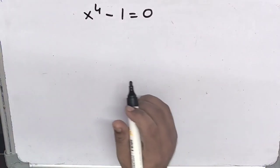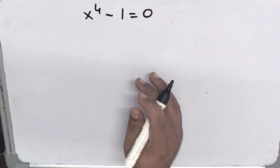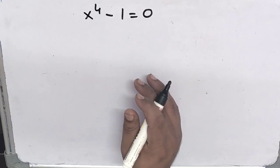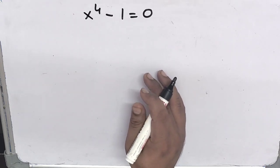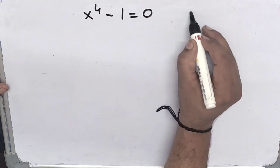Hello everyone, welcome back to our channel. In today's video we are going to solve an equation that is x to the power 4 minus 1 equals to 0, in which we have to find the value of x.